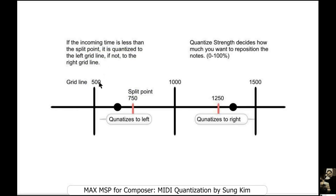To quantize the elapsed time, you need to set up the grid line and also the split point. The split point is in the middle between the grid lines. If the incoming time value is smaller than the split point, then it is quantized to the left grid line. If not, then to the right grid line.